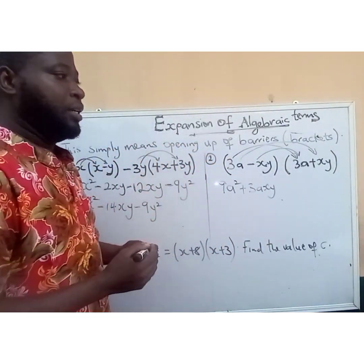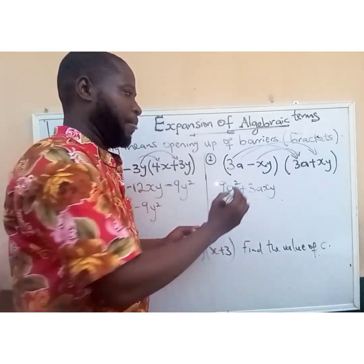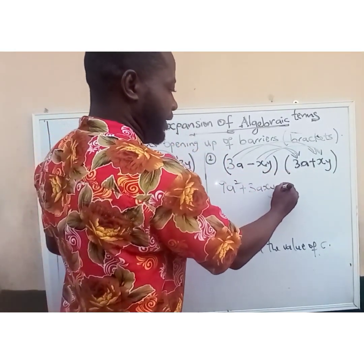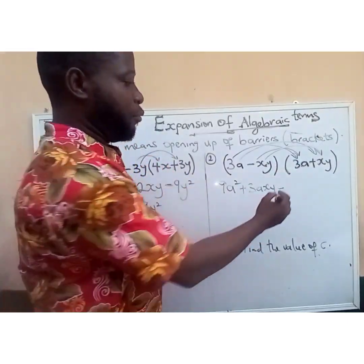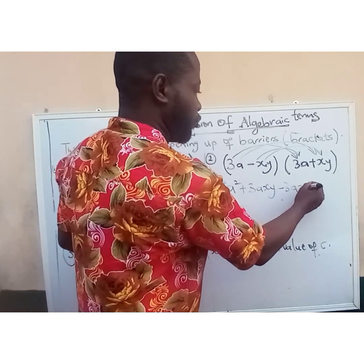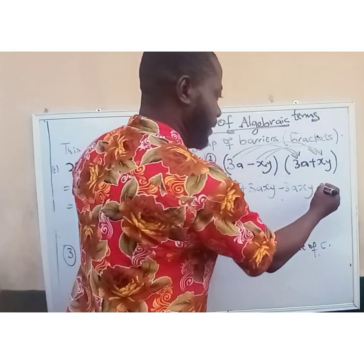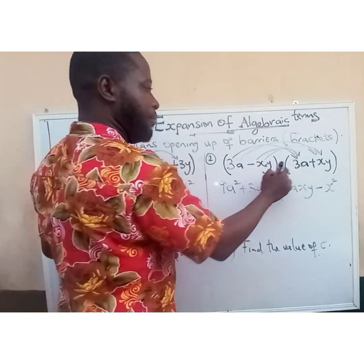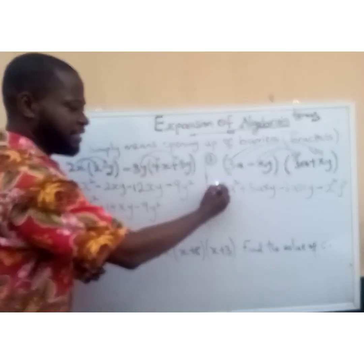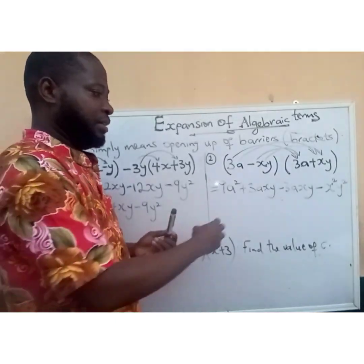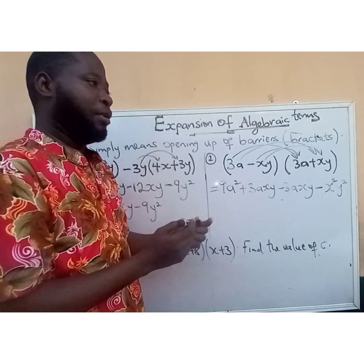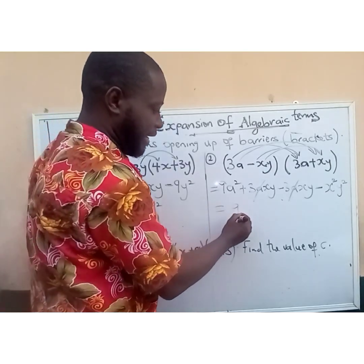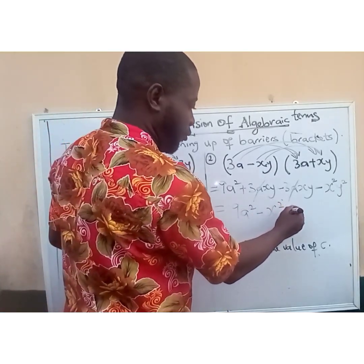Now we pick the second term, minus xy, and use it to multiply everything in the bracket. Minus times plus gives minus, so xy multiplied by 3a gives minus 3axy. Then minus times plus gives minus, x multiplied by x is x squared, and y multiplied by y is y squared, giving minus x squared y squared. We have plus 3axy and minus 3axy — their signs are different so they cancel. The final answer is 9a squared minus x squared y squared.